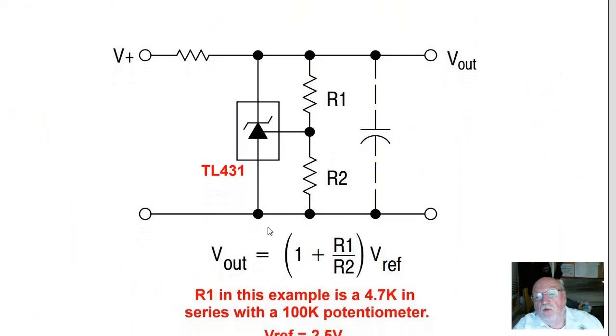Your basic formula: R1 is composed of the 4.7K in series with 100K pot, and R2 is the value we will be altering to get a different charge voltage range. V reference is always 2.5 volts. Again, Vout equals 1 plus R1 divided by R2 times Vref.